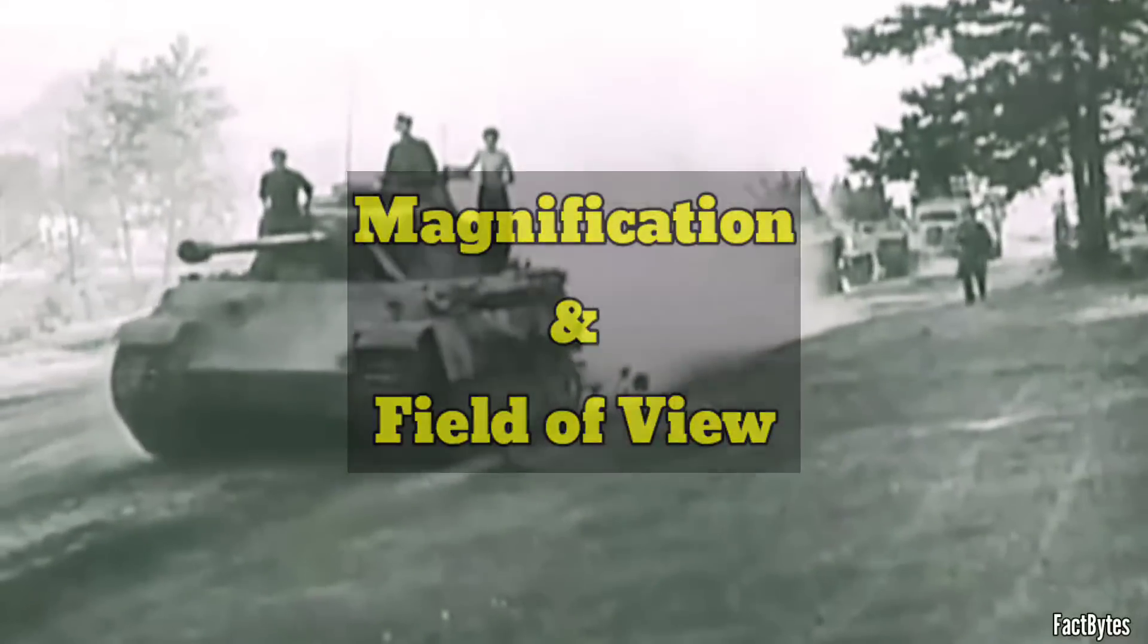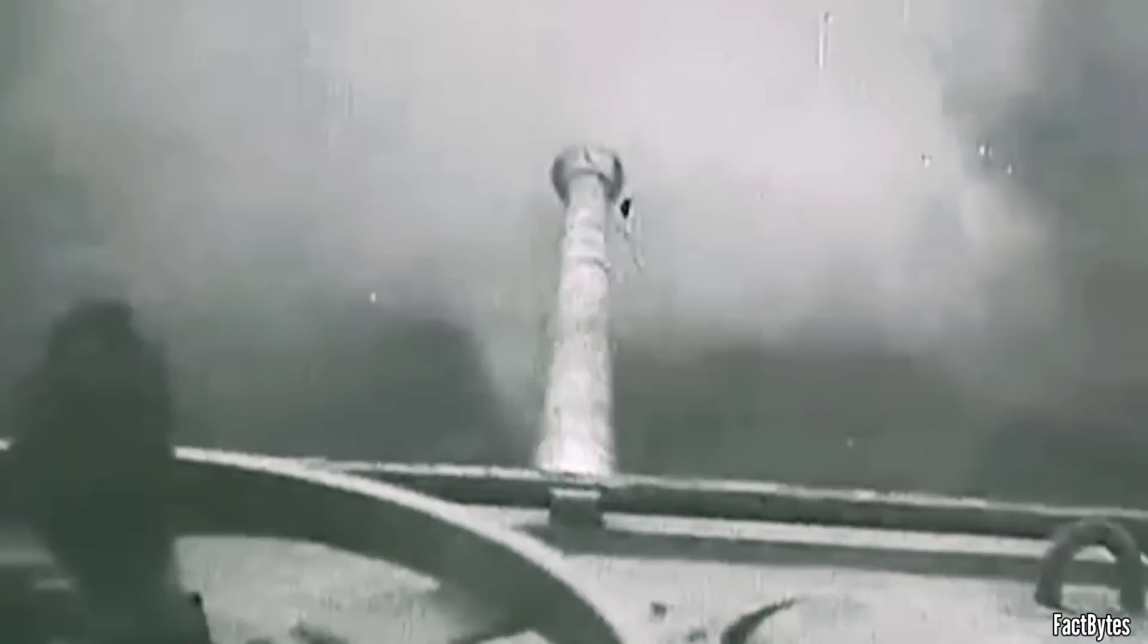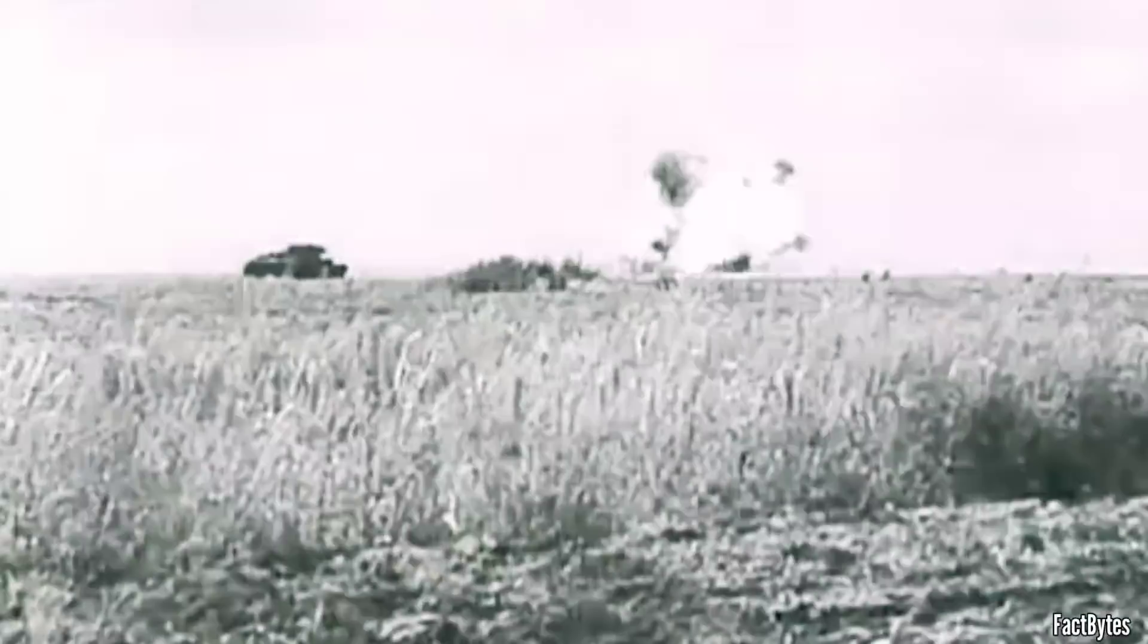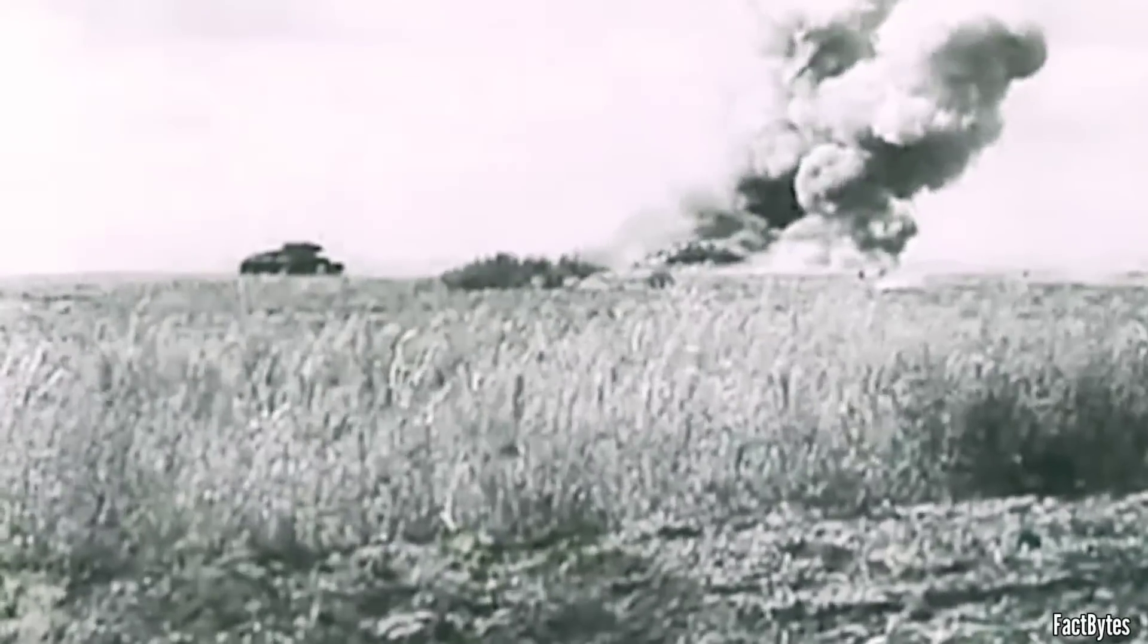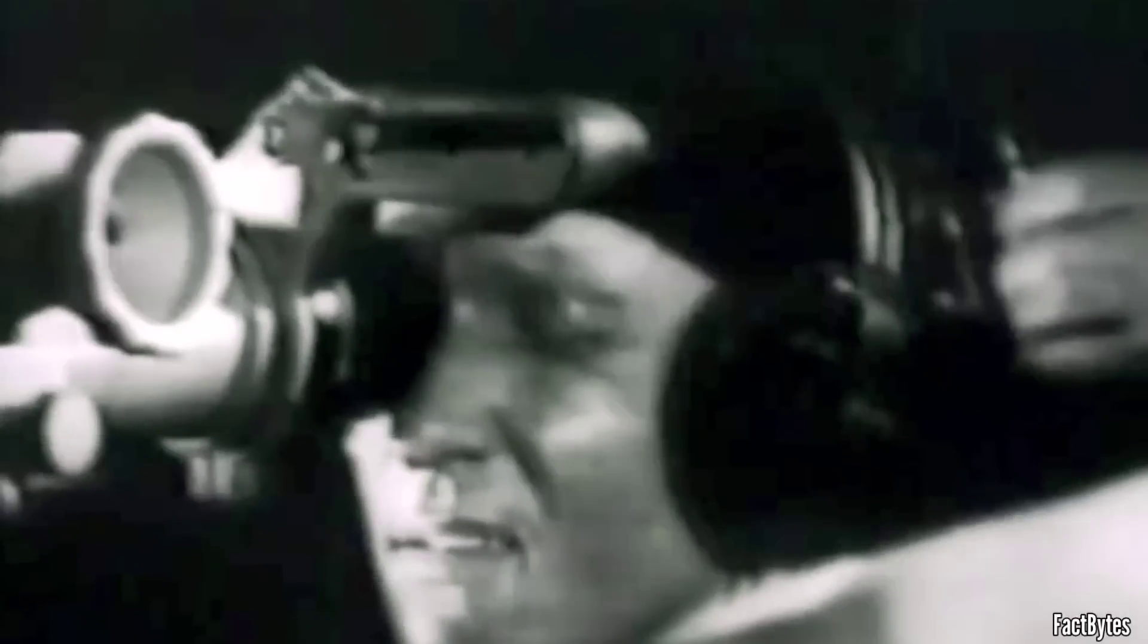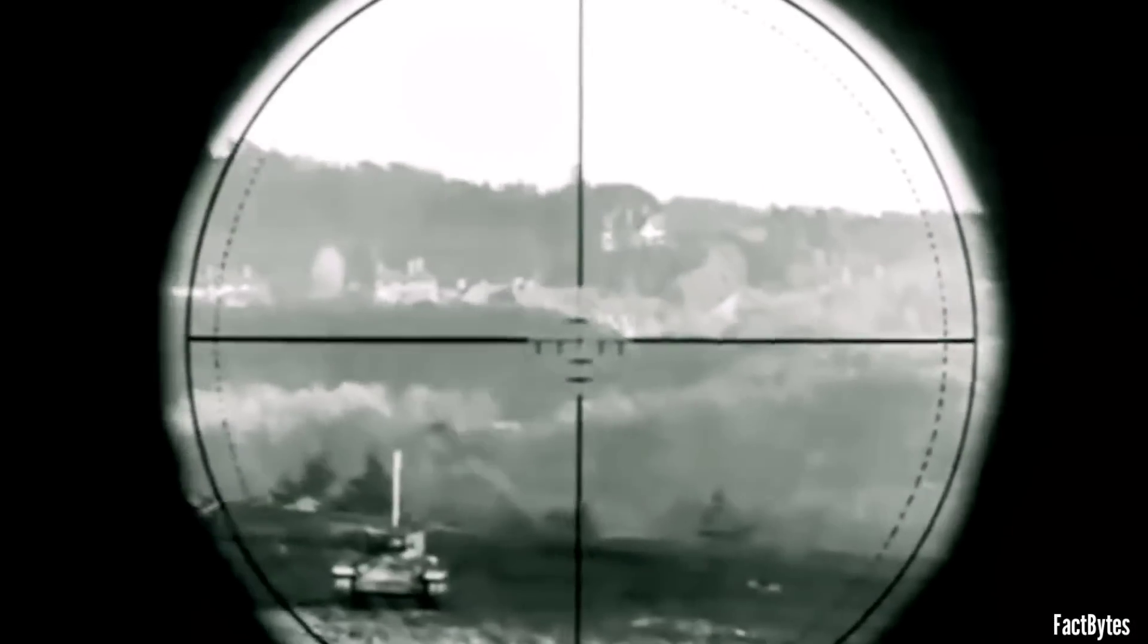Innovations in German tank technology, particularly with newer models like the Panther and Tiger, included gun sights with adjustable magnifications. This feature proved incredibly relevant in combat situations, where the ability to adapt to varying engagement ranges was crucial. It's a common misconception that German tank sights had higher magnifications compared to those of the Allies. In reality, Allied optics were generally not inferior in terms of magnification when compared to German sights.